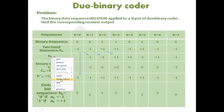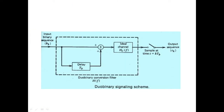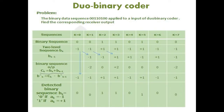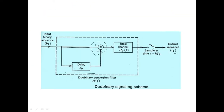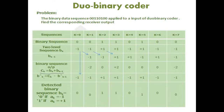We have seen two equations. The transmitter equation is bk plus bk minus one, as shown here. bk is the upper path, and the delayed sequence is bk minus one. When we add both together, the sequence after passing through the channel is called ck, the received sequence.